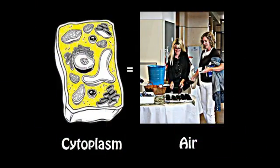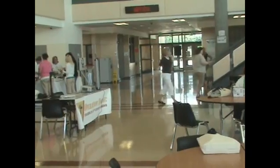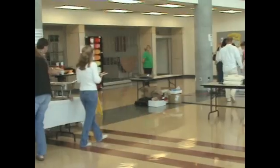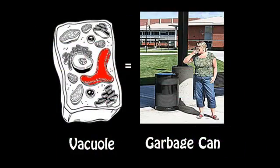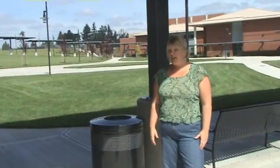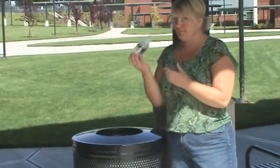The cytoplasm of a cell is like the air around us. The vacuole of a cell is like a trash receptacle. The vacuole stores food, water, and waste. This trash receptacle is like a vacuole because it stores waste, and if desperate, water and food.